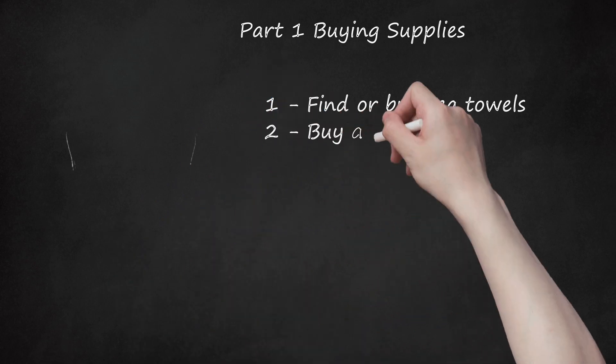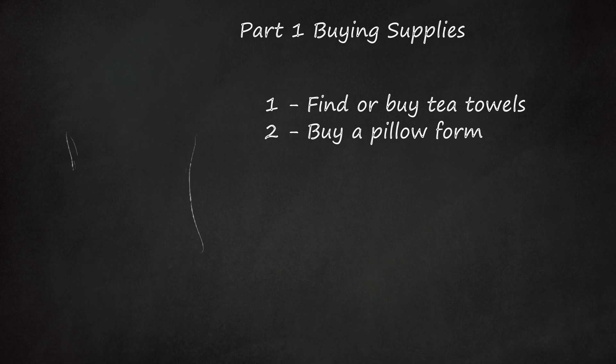Step 2: Buy a pillow form. You can choose a synthetic or down pillow in a lumbar or square style. Make sure it is no more than 12 inches tall and 2 inches thinner than the width of your tea towel.